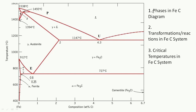First, we need to study three different things involved in this Iron-Carbon diagram. The first is the phases in the FE-C diagram - these are the phases of iron and carbon that we see in mixture form and separate form, such as the liquid phase, Fe3C, gamma, delta, and alpha phases. Second, we need to study the transformations or reactions involved in this Iron-Carbon system. Third, we need to study the critical temperatures.